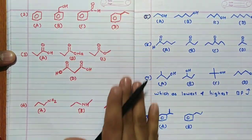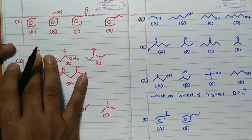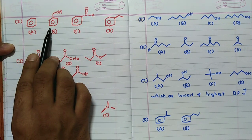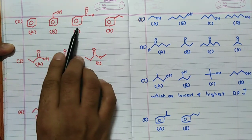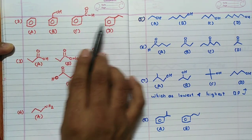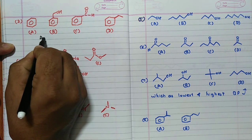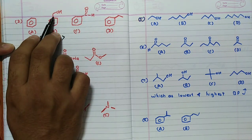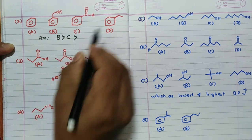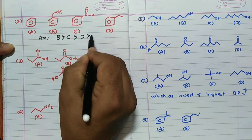Problem 2 involves benzene, benzyl alcohol, an aldehyde, and ethyl benzene. Benzyl alcohol (B) has the highest boiling point due to hydrogen bonding. The aldehyde (C) is next due to dipole-dipole forces. Between the two hydrocarbons, D has a longer chain length than A, so the order is B > C > D > A.